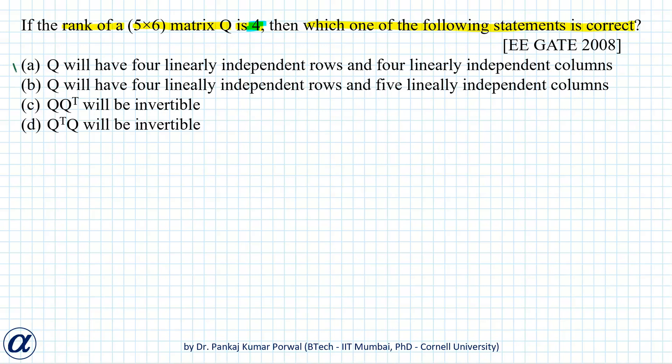So option A is the correct answer. Now to understand why other options are not correct, let's go to B. B says that Q will have 4 linearly independent rows and 5 linearly independent columns, so that is obviously not correct.